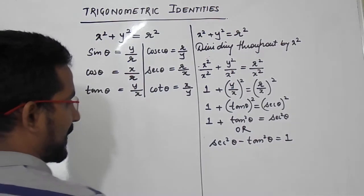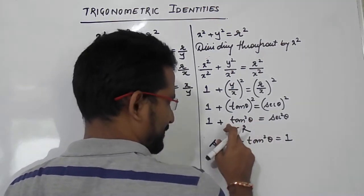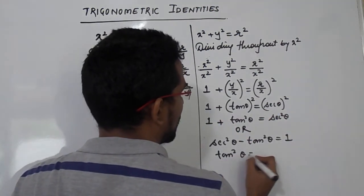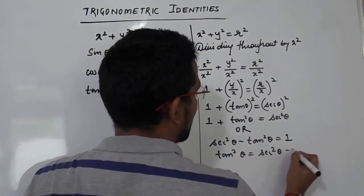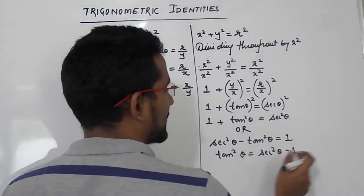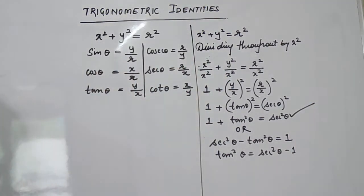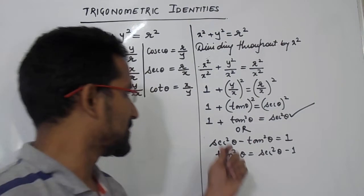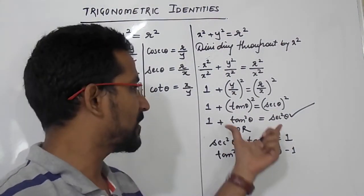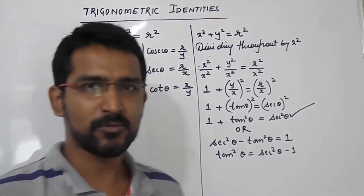This is another very important identity: 1 + tan²θ = sec²θ, or equivalently sec²θ − tan²θ = 1, or tan²θ = sec²θ − 1. We obtained this identity when we divided the equation x² + y² = r² throughout by x².